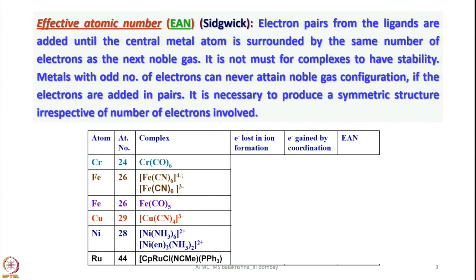Now I will introduce another term: effective atomic number, or EAN, introduced by Sidgwick. Electrons donated from the ligands are added until the central atom is surrounded by the same number of electrons as the next noble gas. This is essentially the same as the 18 electron rule, except that in the EAN we count all electrons including inner shell electrons, not just valence electrons. Metals with an odd number of electrons can never attain noble gas configuration — so there are exceptions. It is also necessary to produce a symmetric structure irrespective of the number of electrons involved; whenever we attempt to write a structure, we should try to write a symmetric structure for a given complex.